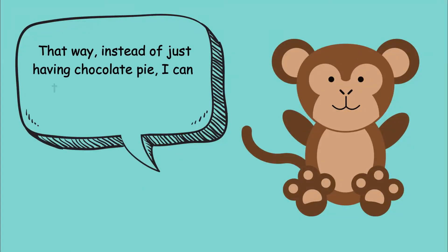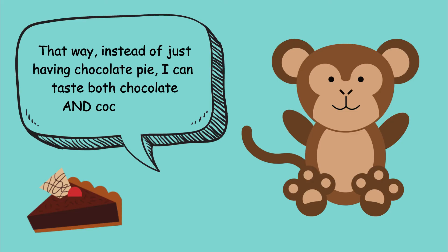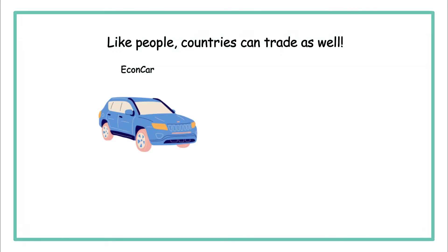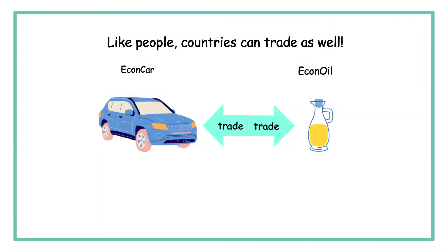...trade a slice of chocolate pie and receive a slice of coconut pie in return. That way, instead of just having chocolate pie, you can taste both chocolate and coconut pie. Exactly! Like people, countries can trade as well. If a country named Econ Car is very efficient at producing cars, and another country named Econ Oil is more efficient at producing oil...